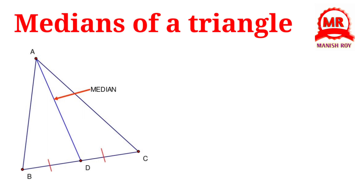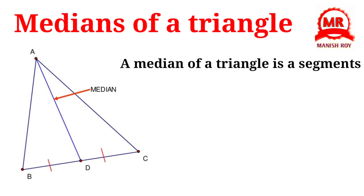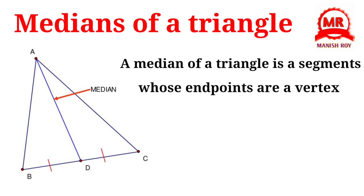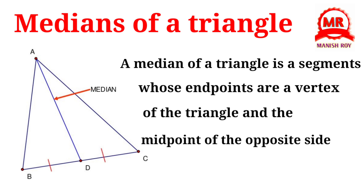Medians of a triangle. A median of a triangle is a segment whose endpoints are a vertex of the triangle and the midpoint of the opposite side. For instance, in triangle ABC, D is the midpoint of side BC, so AD is a median of the triangle. In any triangle, there are exactly three medians.